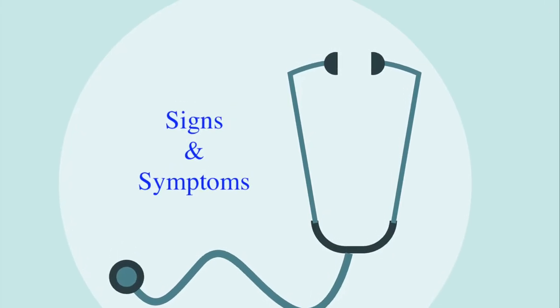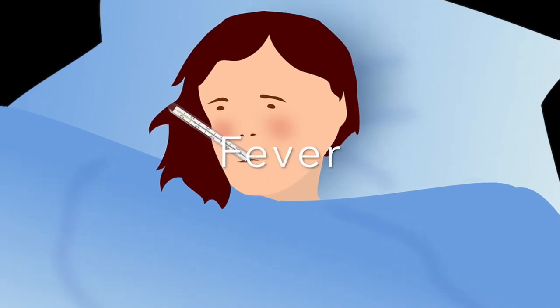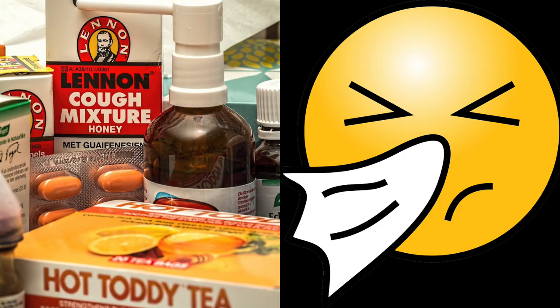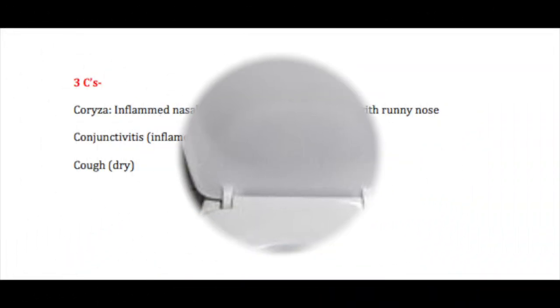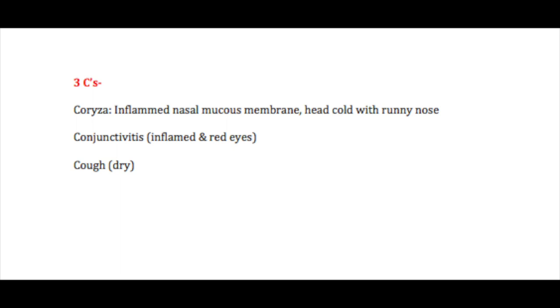Other signs and symptoms of measles include high fever, runny nose, dry cough, conjunctivitis, coryza, and then the rash that shows up a few days after the fever, and sometimes severe diarrhea as well. An important tip: the three C's associated with measles are coryza, conjunctivitis, and cough, along with the high fever and rash.